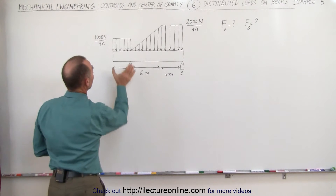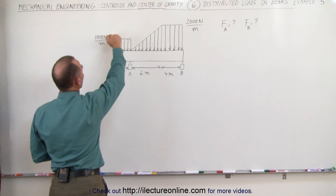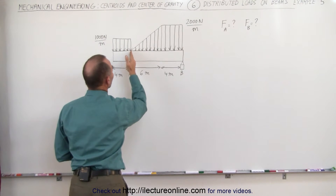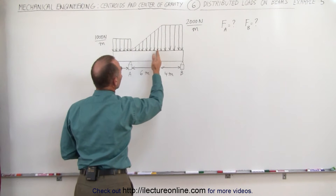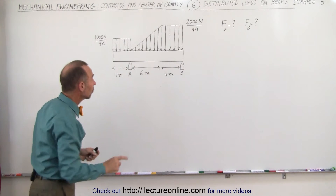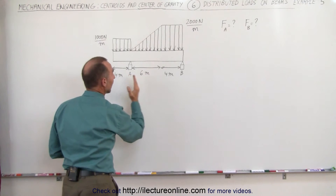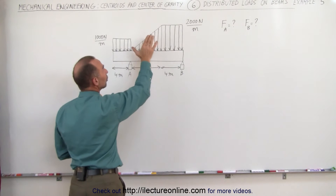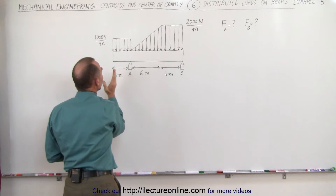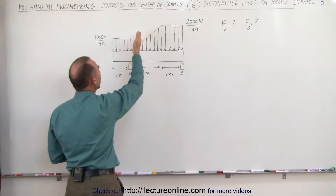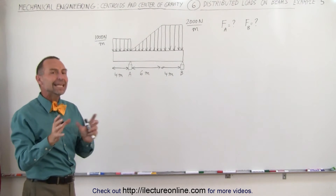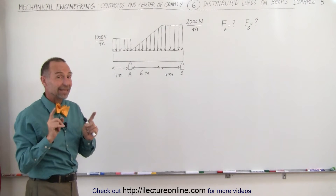Notice there are three sections to the load. There's a section where the load equals 1,000 N per meter for the first 4 meters. Then we start at 0 and increase to 2,000 N per meter for the next 6 meters. And then we stay at 2,000 N per meter for the last 4 meters. Also notice that we have support A and support B. The load in certain sections will cause a clockwise moment, but the load between the beginning of the beam and A will cause a counterclockwise moment. So those are competing moments against one another and we have to take that into account.